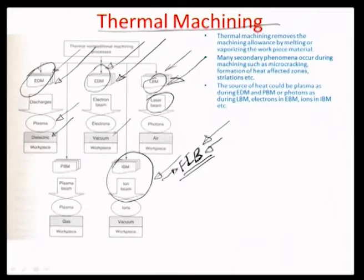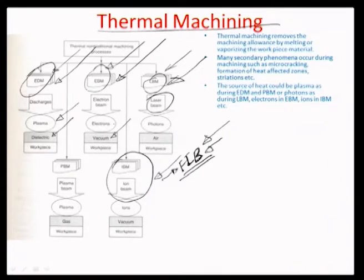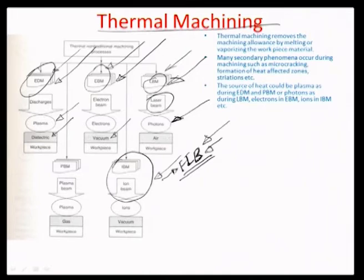In e-beam machining there is a vacuum in between; the beam of electrons travels through a high vacuum column and at the other end is the workpiece. The beam interacts with the workpiece by transferring the electron's kinetic energy to the bond vibration energy of the material — that is the mechanism of material removal in e-beam machining. In LBM, a bunch of photons coherently spaced and of high intensity is suddenly released in a very small area, and the medium through which energy is transferred to the workpiece is just air.